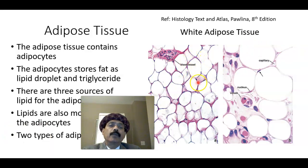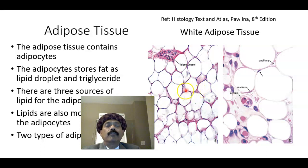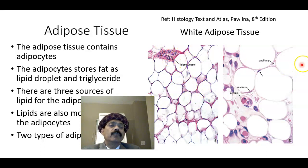The adipocytes are supported by connective tissue. We have connective tissue septa composed of fibroblasts and reticular fibres, and these septa contain blood vessels — capillaries and venules.